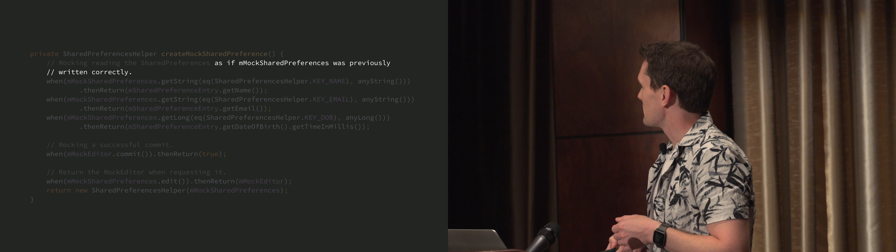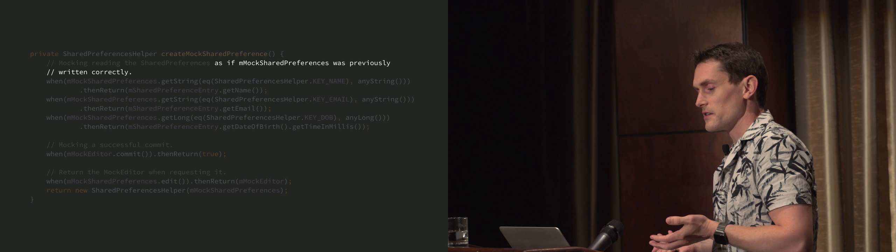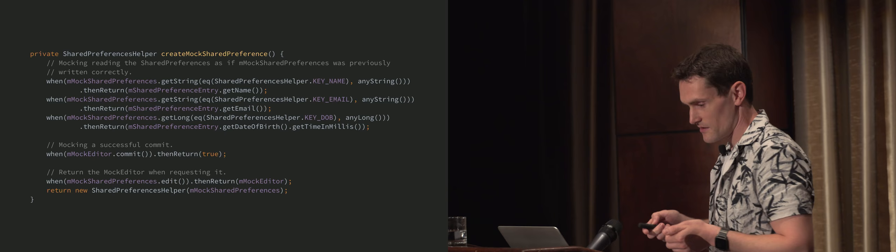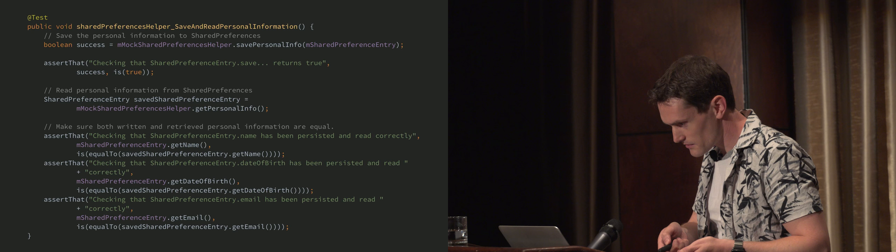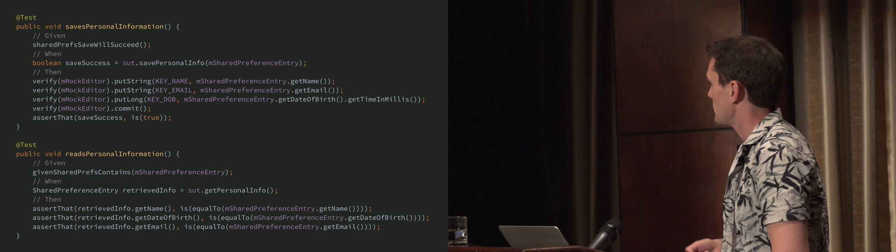There's an interesting comment right at the top here which says that it will mock the reading as if it was written correctly. And that is exactly what we've just seen — it said that you could save and then read, and it just passed as if we'd written it correctly when we didn't. So we're doing two things here. We've got save and we've got read. If we split those into two separate tests, we are already 100% better off. It's more readable and it's testing one thing in each test.